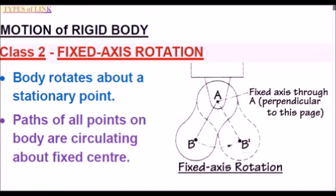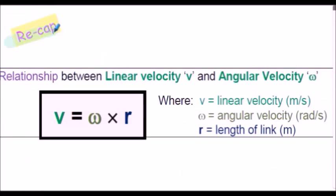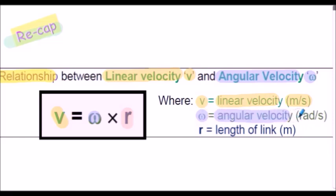Considering the motion of a rigid body: our Type 2 or Class 2 link has a fixed axis of rotation. The body rotates about a stationary point through A, perpendicular to the page, and the path of all points on the body are circular about this fixed center. Here's a brief recap of the relationship V equals omega times R, where V is linear velocity in meters per second, omega is angular velocity in radians per second, and R is the radius or length of the link in meters.